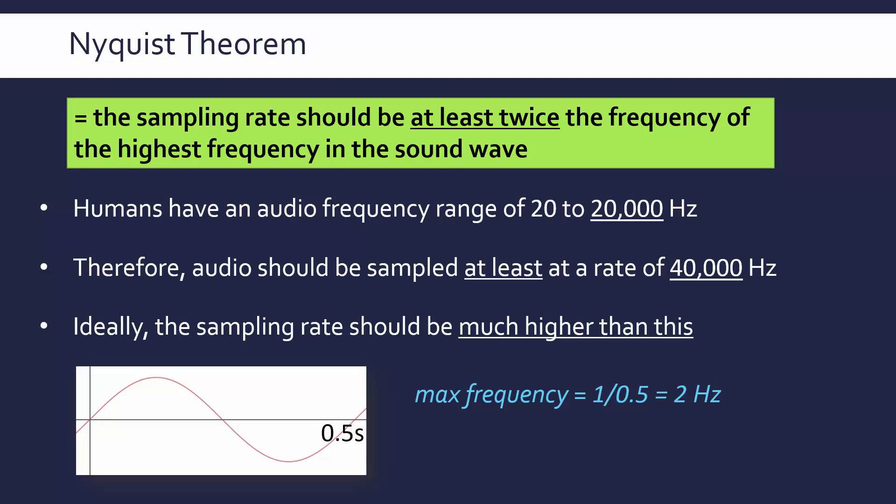And let's say this is our maximum frequency. So therefore, our sample rate needs to be greater than or equal to at least 4 Hz. So it should be much more than 4 Hz, ideally, but it should be at least 4 Hz according to the Nyquist theorem.